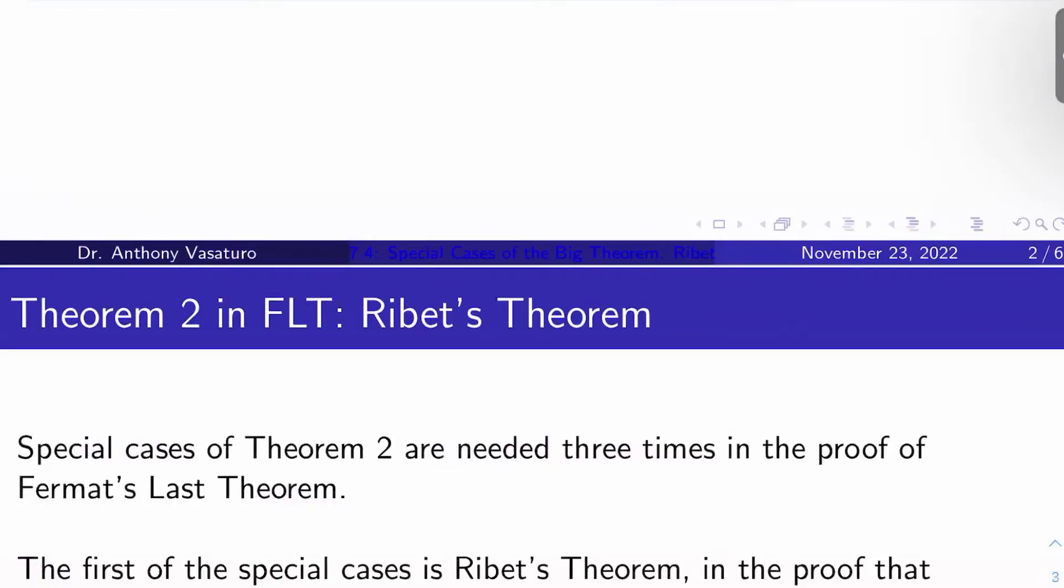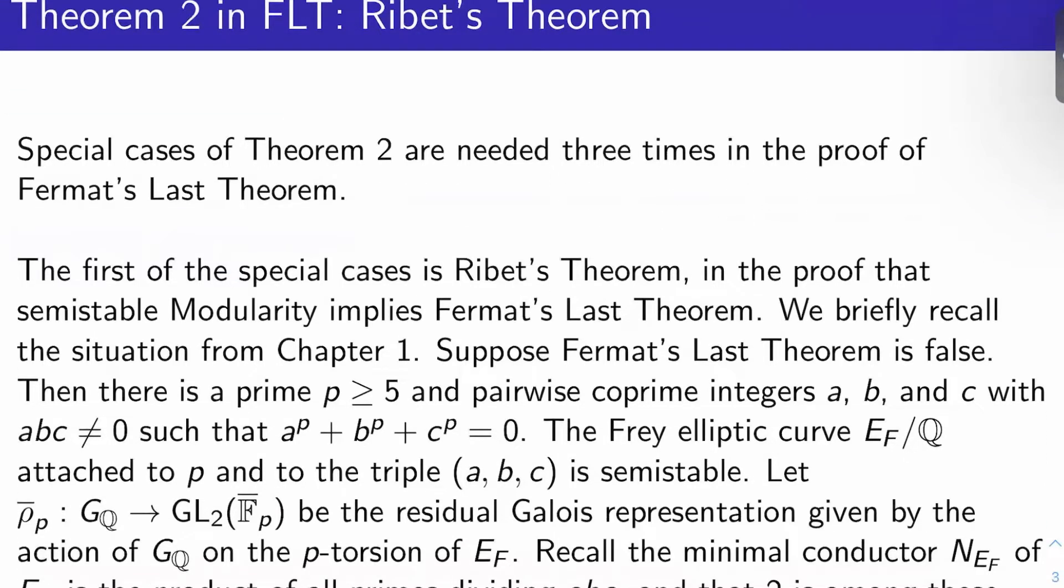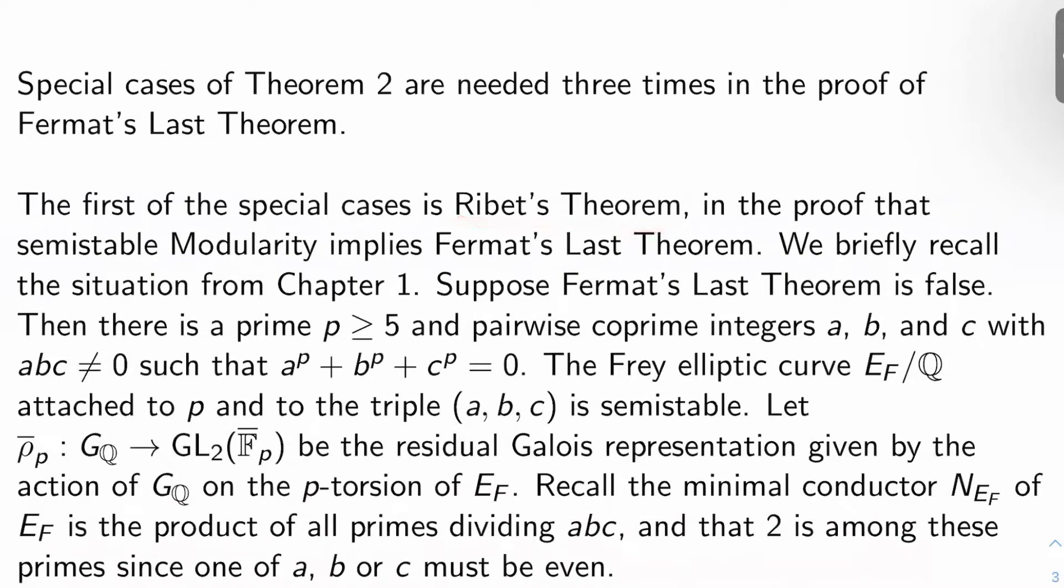So we would like to see today how Ribet's theorem is a special case of this. Special cases of theorem two are needed three times in the proof of Fermat's last theorem. The first of those special cases is Ribet's theorem, which we have seen is used in the proof that semi-stable modularity implies Fermat's last theorem. This used to be the so-called epsilon conjecture.